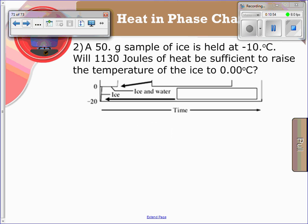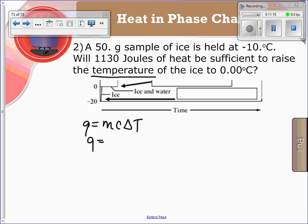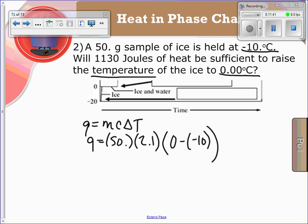A 50 gram sample of ice is held at negative 10 degrees Celsius. Will 1,130 joules of heat be sufficient to raise the temperature of the ice to 0.00 degrees Celsius? We are raising the temperature of the ice — this isn't a phase change — so Q equals MCΔt. Q equals 50 grams times 2.1 (specific heat of ice) times ΔT, which is 0 minus negative 10, giving positive 10. So Q equals 1,050 joules. To answer the question: yes, 1,130 joules will be sufficient, because only 1,050 joules are actually needed.